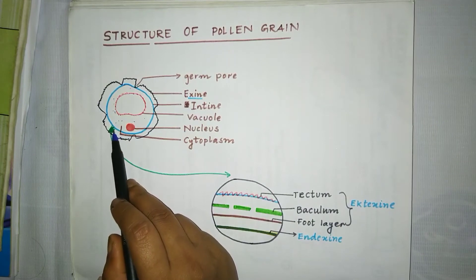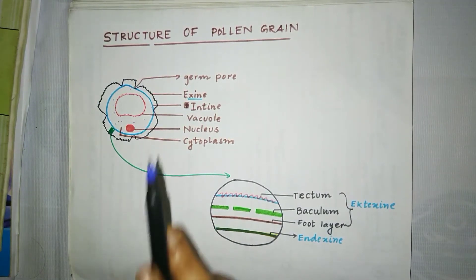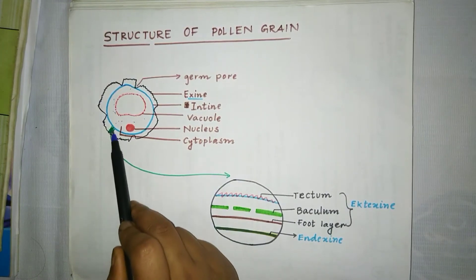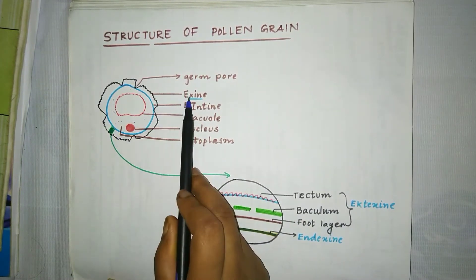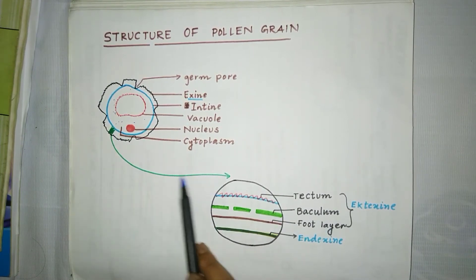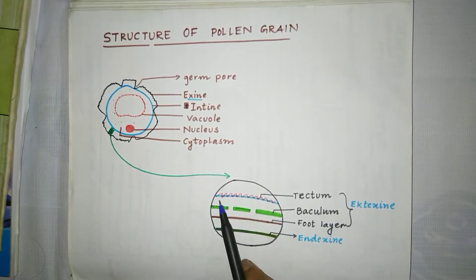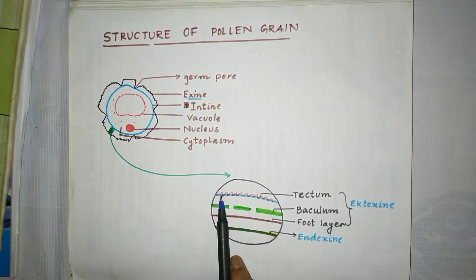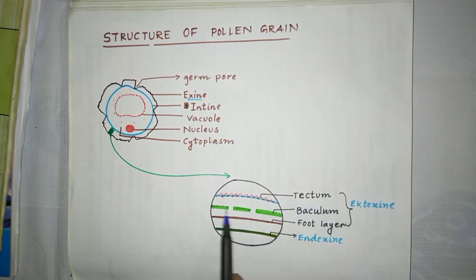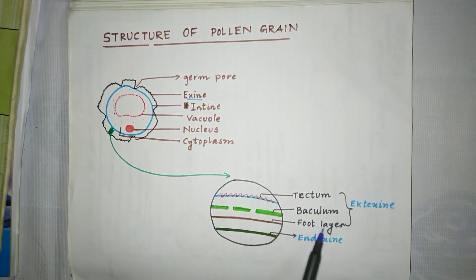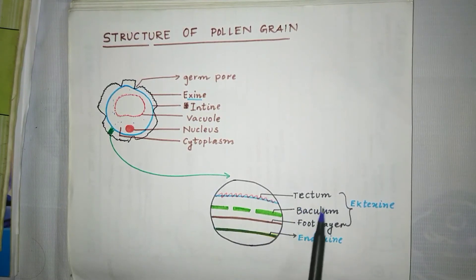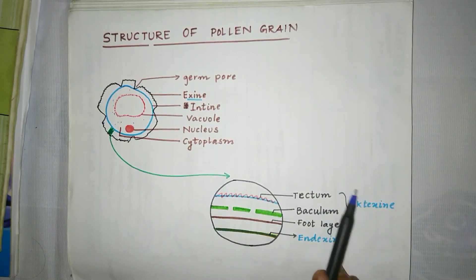As we saw, exine contains two parts: extexine and endexine. Now we will see the detail of exine when we see it under the microscope. The upper portion is known as tectum, the discontinuous portion is known as vaculum, and the continuous layer is known as foot layer. Next to the foot layer, endexine is present. Tectum, vaculum, and foot layer together are known as extexine. This is the whole structure of exine.